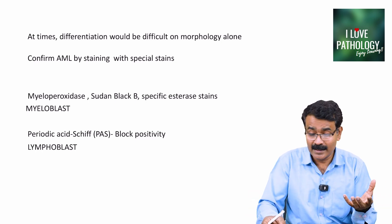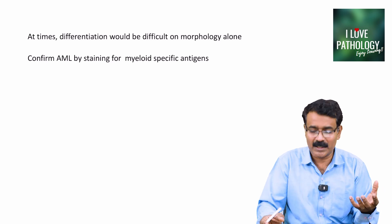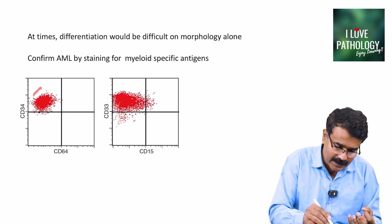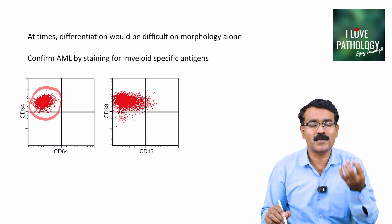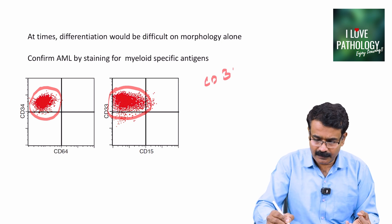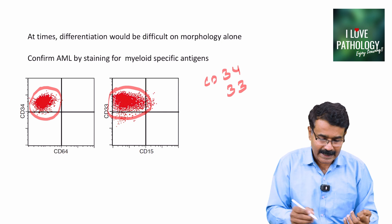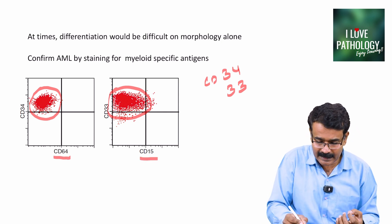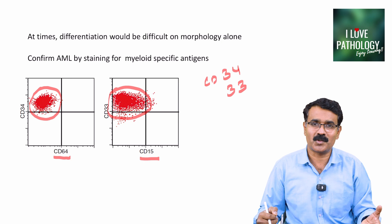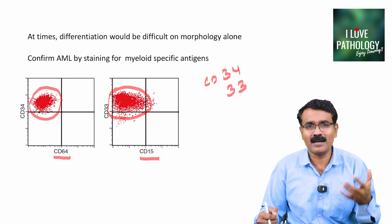Sometimes it is difficult to differentiate even with special stains, and then you need to do myeloid-specific antigen assay by flow cytometry. CD34 and CD33 are the stains for myeloblasts. It is negative for CD64 and CD15, which are markers of more differentiated cells. Flow cytometry helps identify whether you are dealing with acute myeloid leukemia or not.